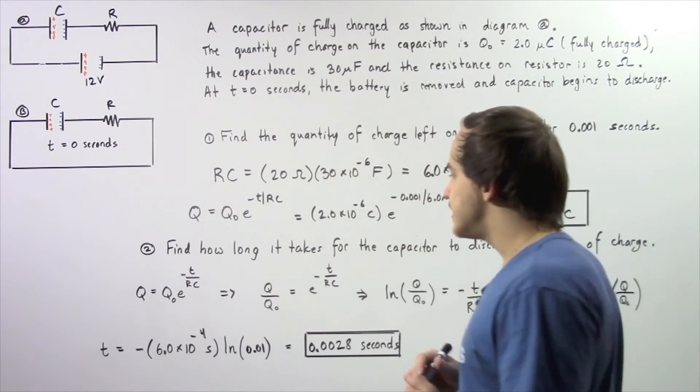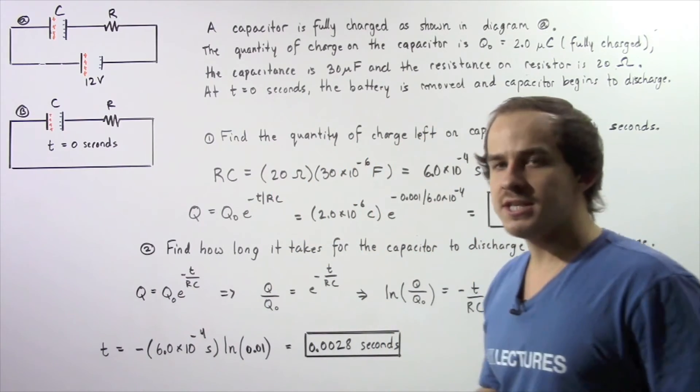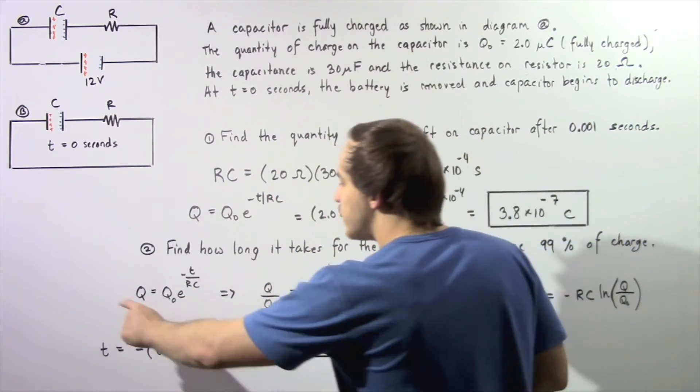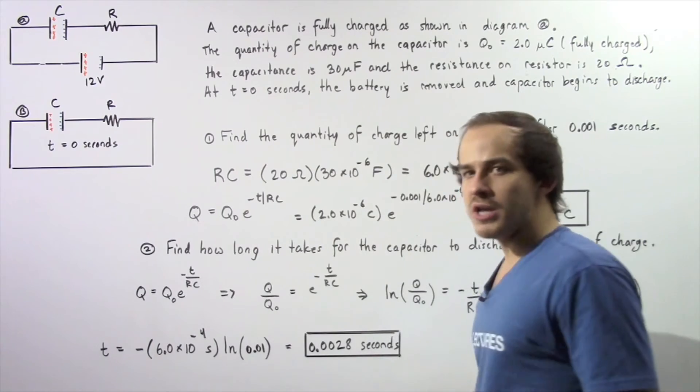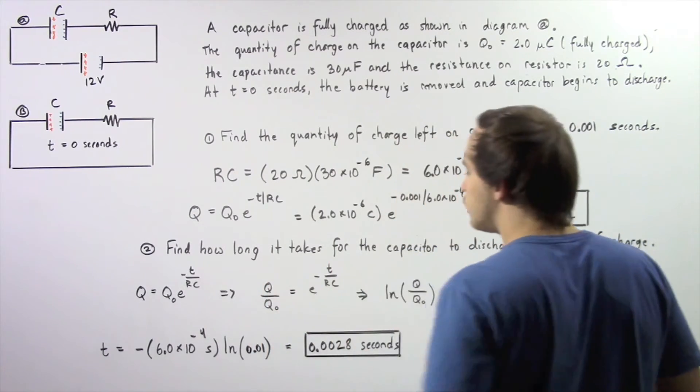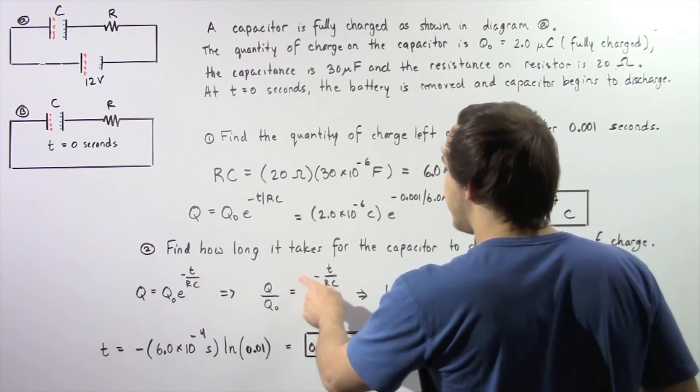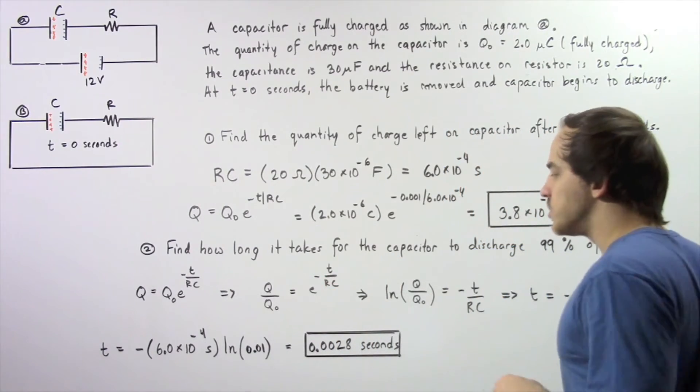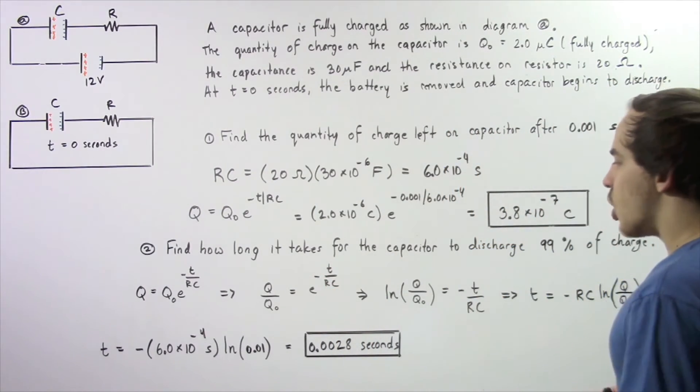So we take this equation, rearrange it, and solve for T. First step is we divide both sides by Q naught. So now we have Q divided by Q naught is equal to e to the power of negative T divided by R multiplied by C.